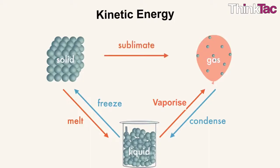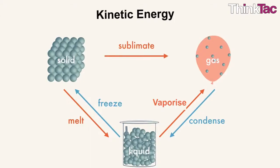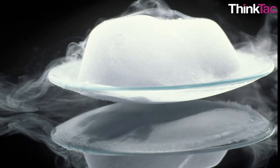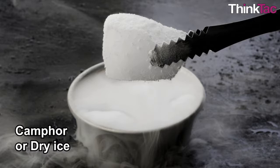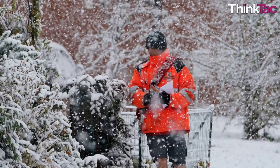When matter changes state, molecular rearrangement happens and the kinetic energy of the molecules increases progressively as the states change from solid to liquid to gas. In some cases, the states of matter may change directly from solid to gaseous, which is sublimation, as in the case of camphor or dry ice — that is solid carbon dioxide — and sometimes even snow, without the intermediate kinetic energy state of turning into a liquid.